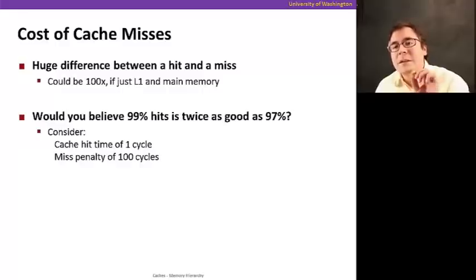But before we get there, let's stop to think a little bit about the cost of cache misses. The difference in time cost of a hit and a miss is huge. It could be 100x. That means that a hit can be 100 times faster than a miss. And just to make you see this in numbers, would you believe if I told you that a 99% hit is twice as good as a 97% hit in terms of time?